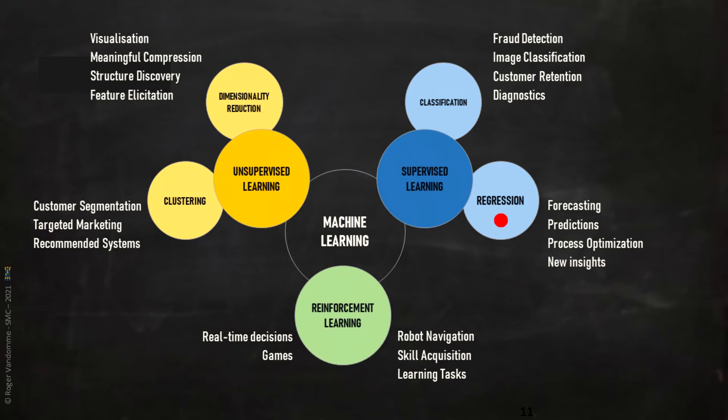We also see a third family of models that we have not yet talked about, which are the models of reinforcement learning. These models are mainly used in the fields of games and robotics. It consists of a learning process based on punishment and reward.